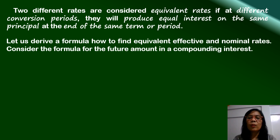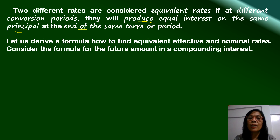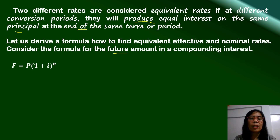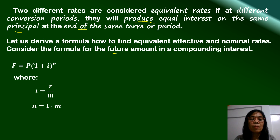Let us derive a formula for equivalent effective and nominal rates. From the conditions for equivalent rates — that they produce equal interest on the same principal at the end of the same term — these two different interest rates will give us the same future value. We use the compound interest future amount formula: F equals P times (1 plus i) raised to N, where i is the periodic interest rate equal to the annual rate over M, and N equals the number of years times M.